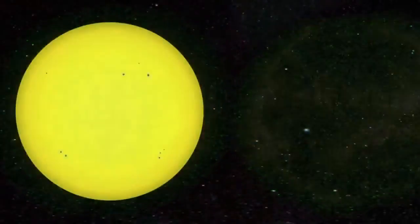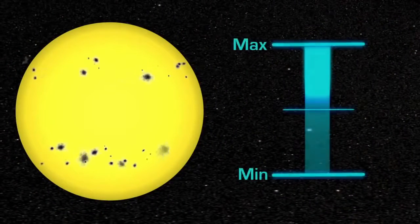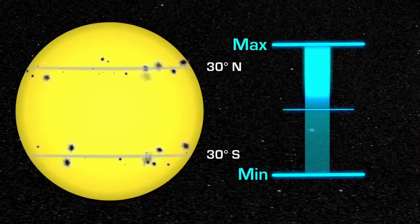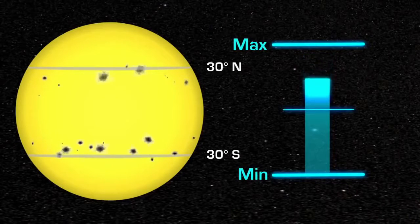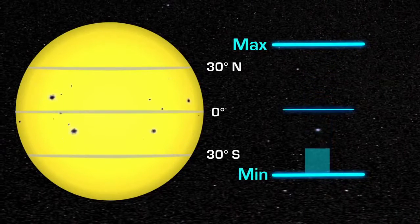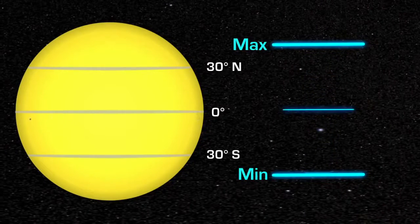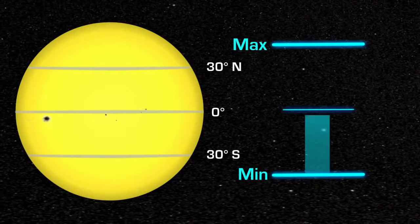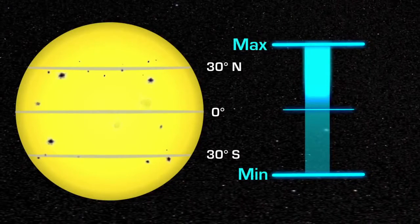During this cycle, the location of the sunspots also changes. They are at middle latitudes during solar maximum and move closer to the equator as the Sun approaches solar minimum. At solar minimum, there are sometimes no sunspots to observe. At solar maximum, there can be many at the same time.